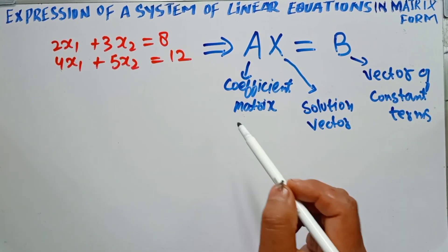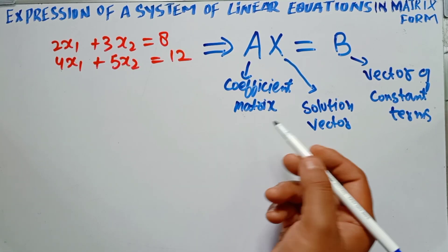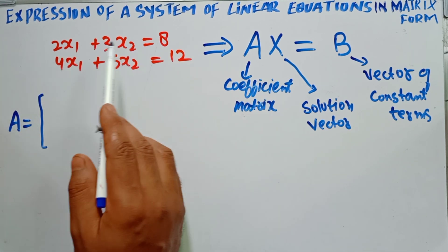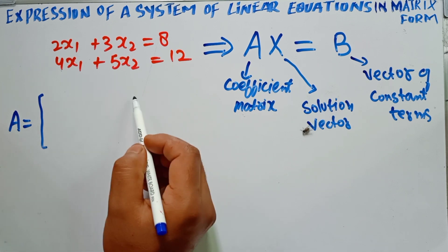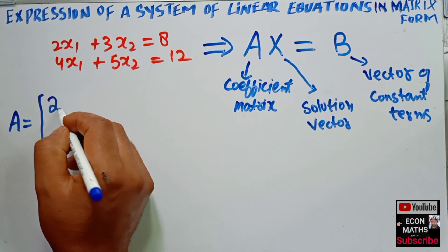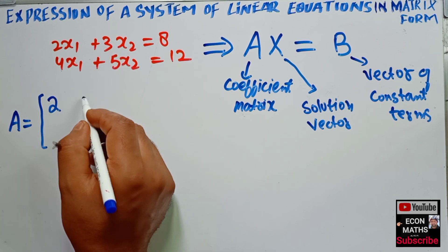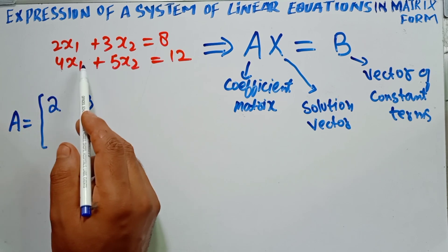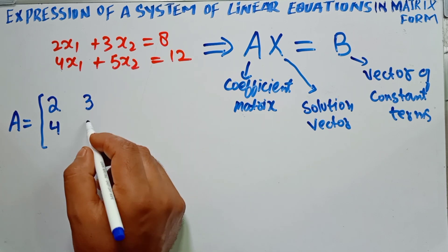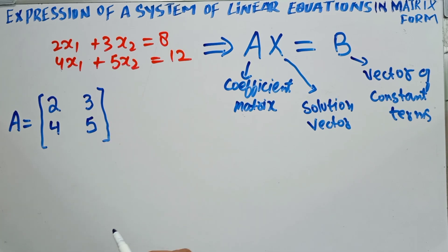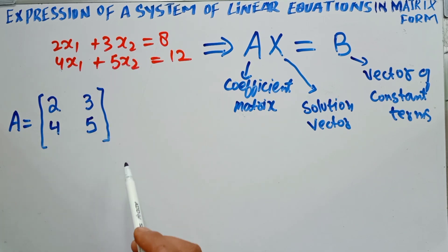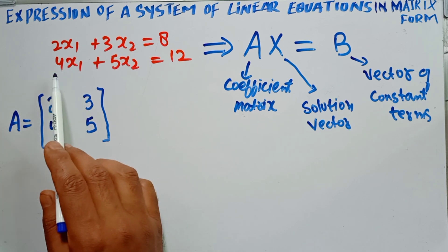Now A is the coefficient matrix — that is, A is a matrix where we take the coefficients of the variables. In the first row we take the coefficients of x1 and x2: the coefficient of x1 is 2 and the coefficient of x2 is 3. In the second equation the coefficient of x1 is 4 and the coefficient of x2 is 5. So the first row of A contains the coefficients of the first equation, and the second row contains the coefficients of the second equation.